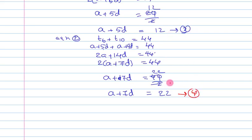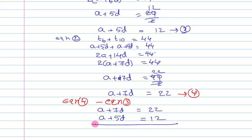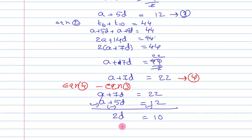Now using equations 3 and 4 to find the values of a and d, I will subtract equation 3 from equation 4. Equation 4: a + 7d = 22, minus equation 3: a + 5d = 12. This gives 7d − 5d = 22 − 12, so 2d = 10, and therefore d = 5.